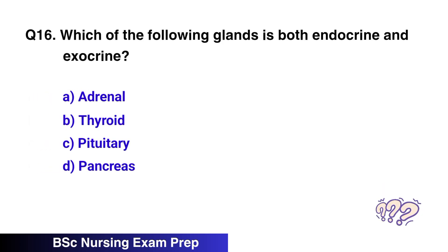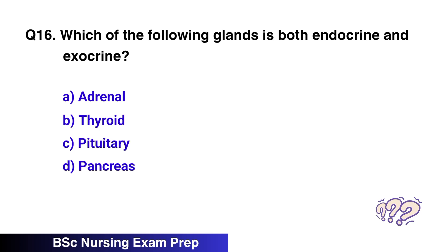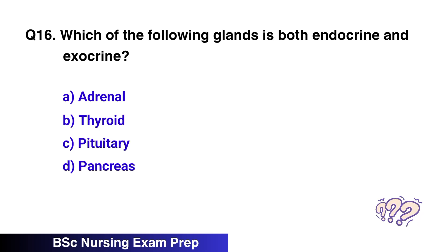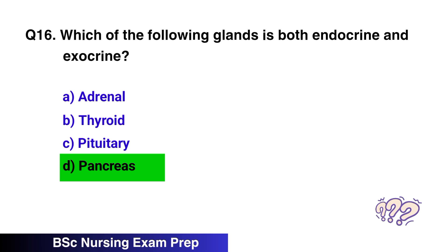Question 16. Which of the following glands is both endocrine and exocrine? The correct option is D, pancreas.